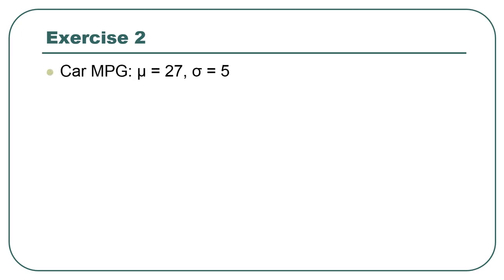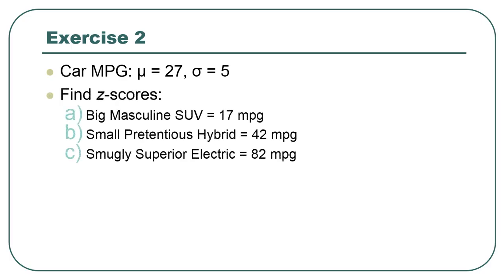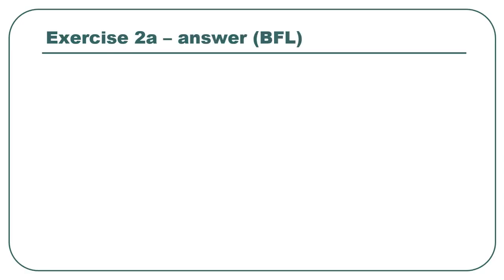Let's say car miles per gallon has a mean of 27 and a standard deviation of 5. Find the z-score of these four cars. Use straight-up logic or use the formula, but you should try the formula at least a bit, because sometimes the numbers don't work out very nicely and you have to use it.